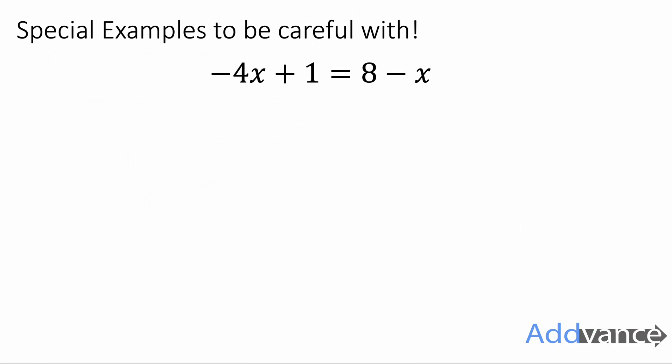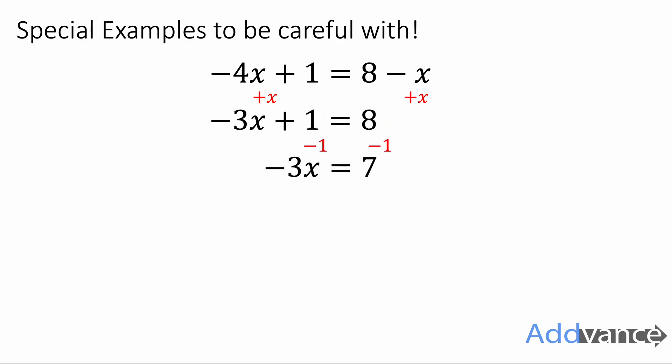Finally, I want to show you this one: minus 4x plus 1 equals 8 minus x. This one's a bit more interesting. We're going to get rid of the minus x by adding x to both sides, and we get minus 3x plus 1 equals 8. The opposite of plus 1 is minus 1, so we subtract 1 from both sides and we get minus 3x equals 7.